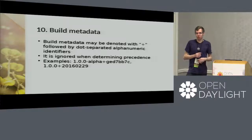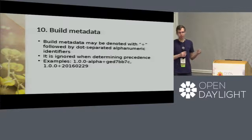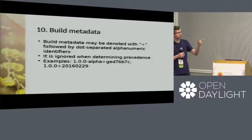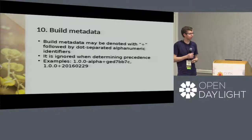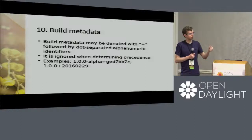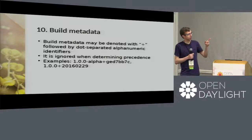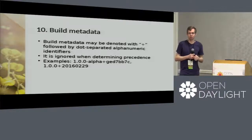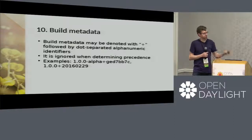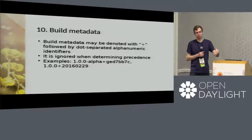You can also add build metadata using a plus sign instead of a dash — for example, 1.0.0-alpha+GED7BB7C. That sorts after the version specified. There are typically two ways to do this: using dates, which sort nicely, or Git hashes, which don't sort well. Sometimes it's nice to have the Git hash to find things because people don't know tags.